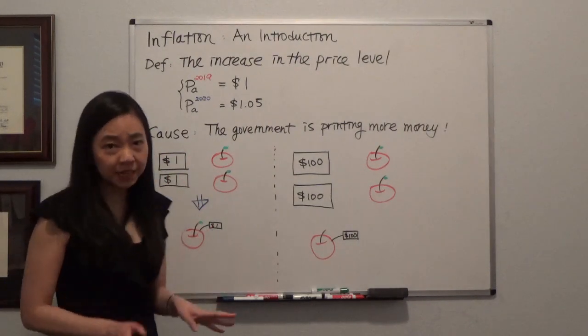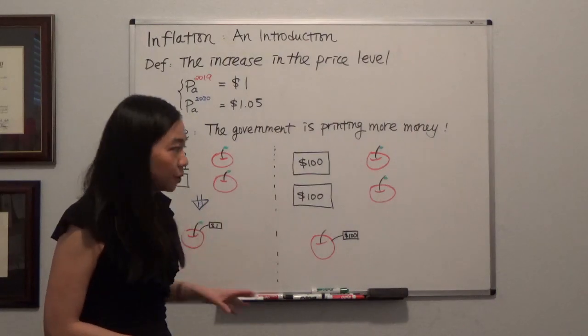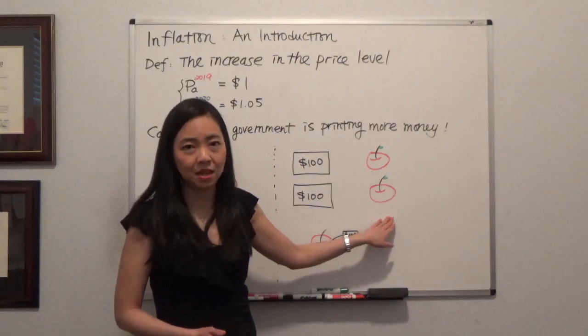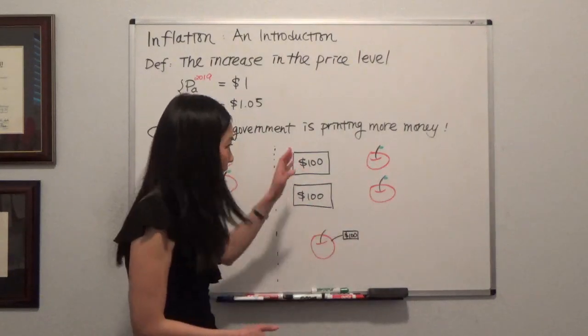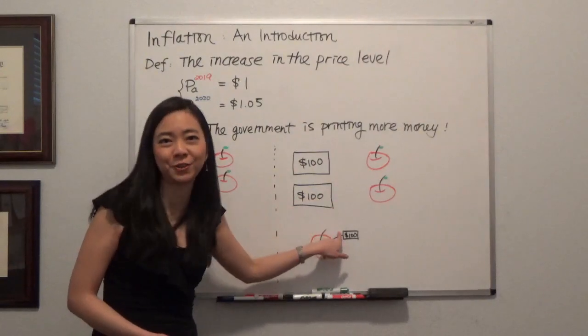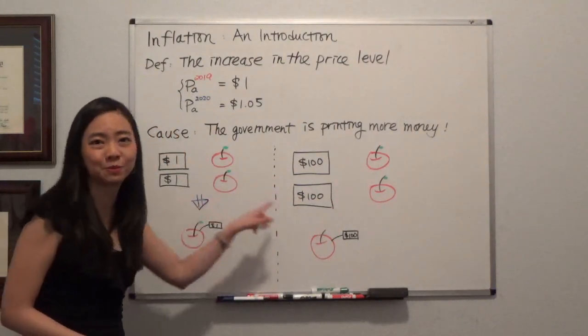Now using a very exaggerated example, suppose the next year in our economy we still just have two apples, but the government is crazy and printing a hundred times more money. Say we have two hundred dollars in circulation, that's a hundred times more than before.